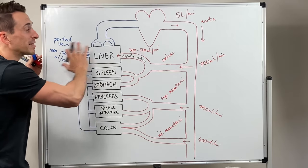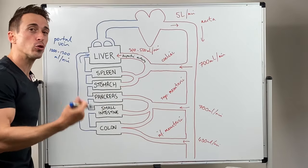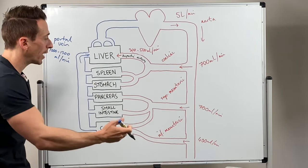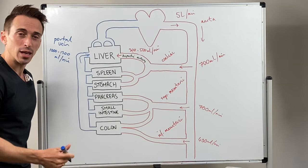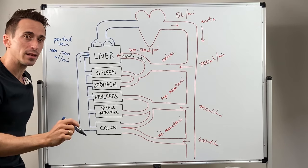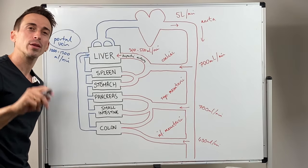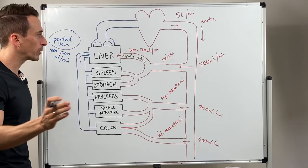And what you're going to find, this is at rest, right? So what you're going to find is after a meal, when the demand of nutrient absorption is high from these particular structures, that the ratio shifts to 90% of the blood being delivered to the liver is coming from the portal vein after a meal. That's called postprandial. Really important.